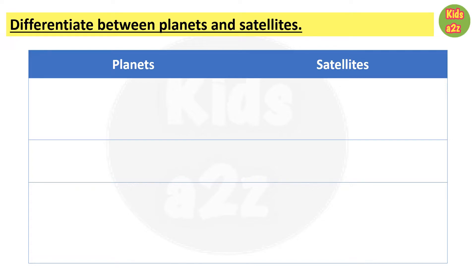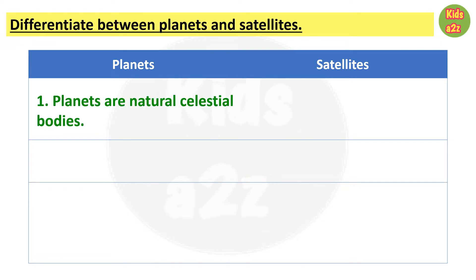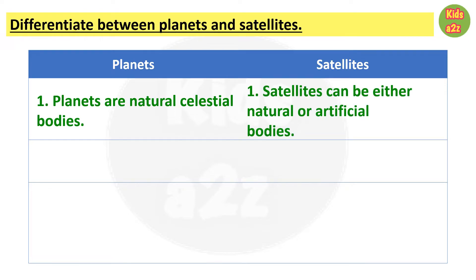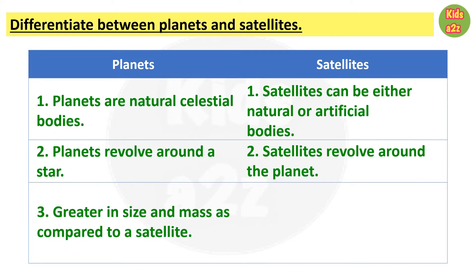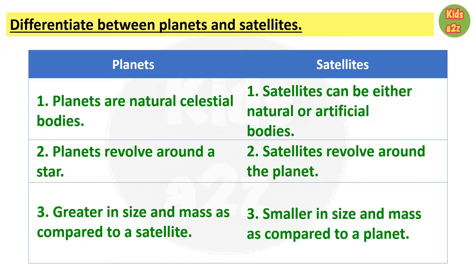Here in this worksheet kids need to write the differences between planets and satellites. First point: planets are natural celestial bodies; on the other hand, satellites can be either natural or artificial bodies. Second point: planets revolve around a star, whereas satellites revolve around a planet.